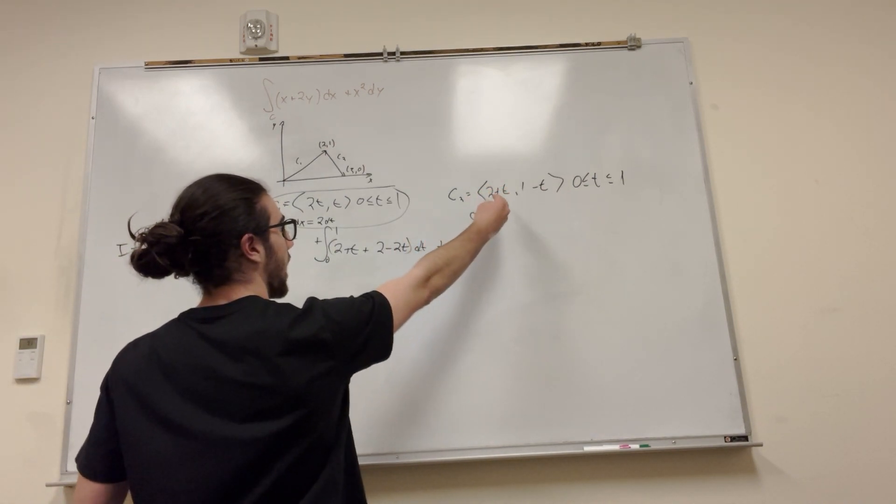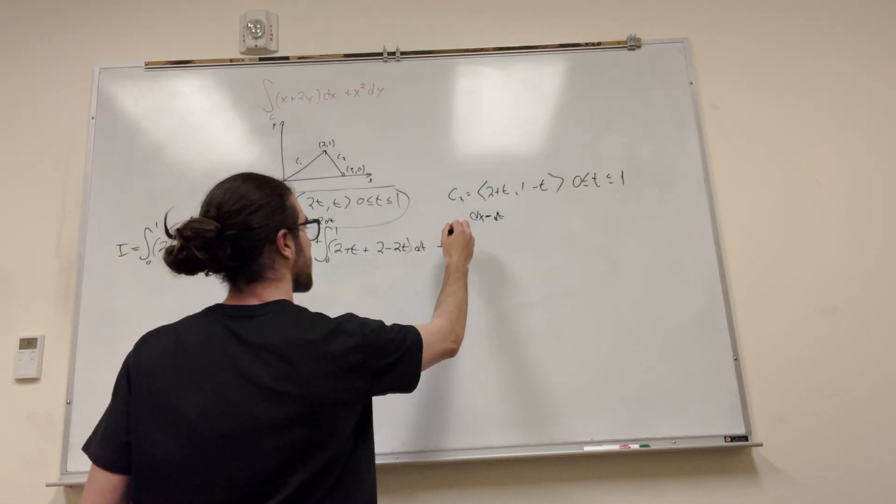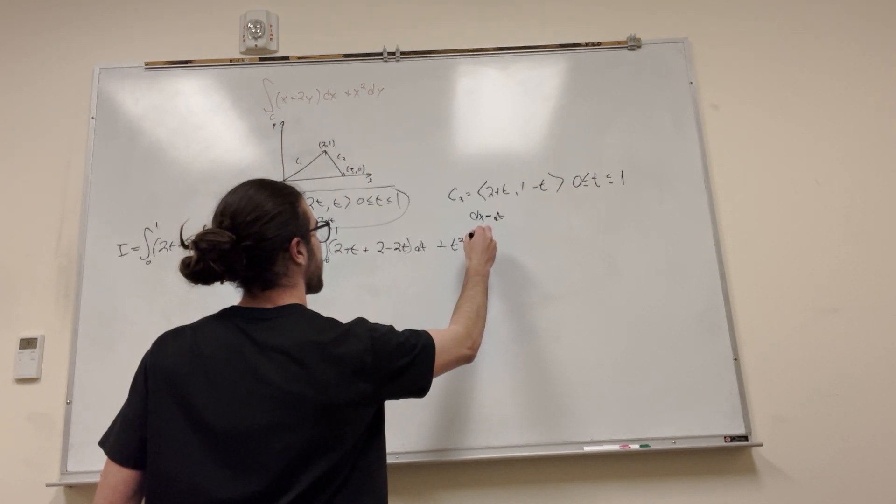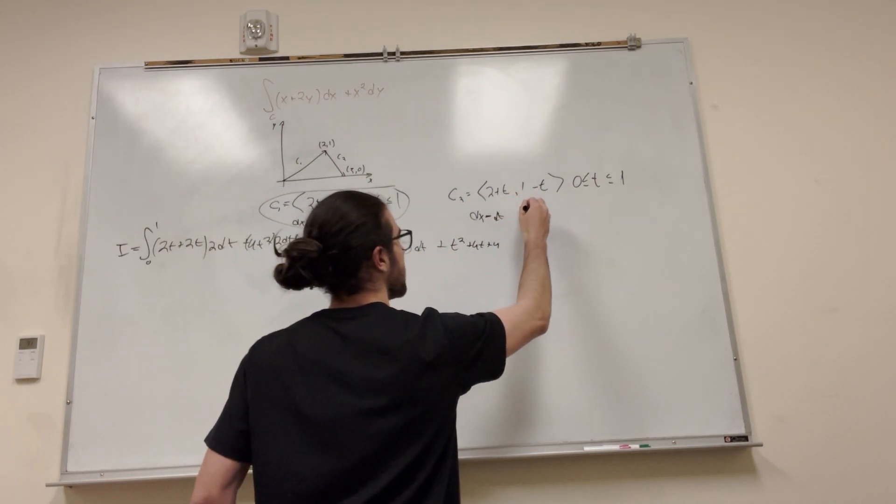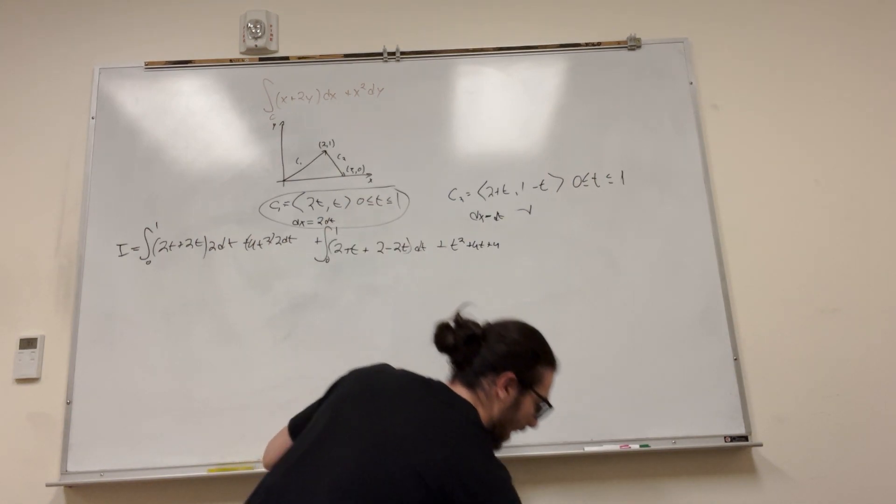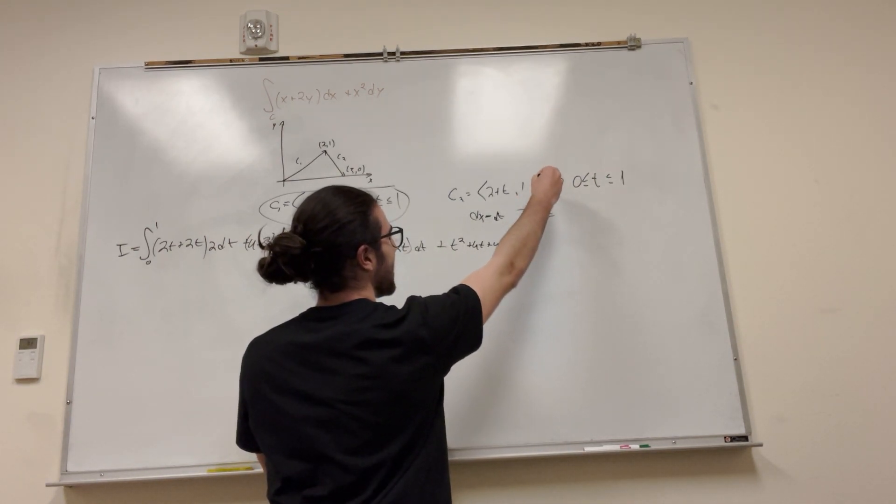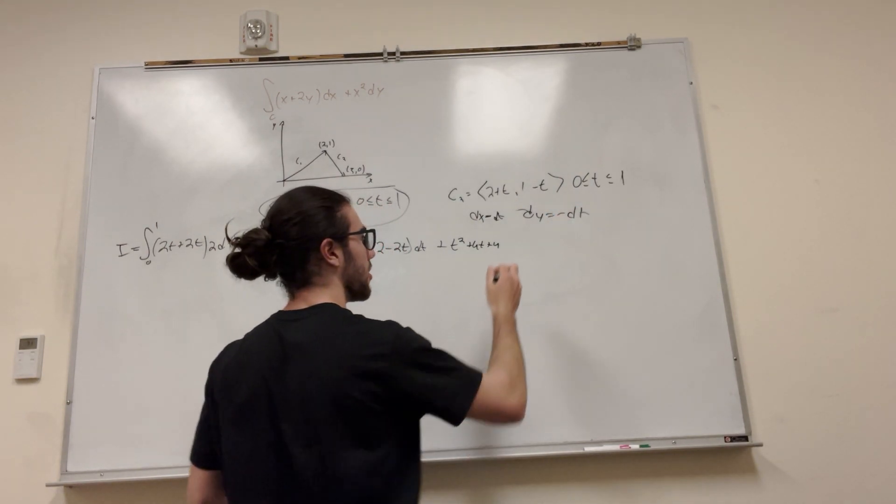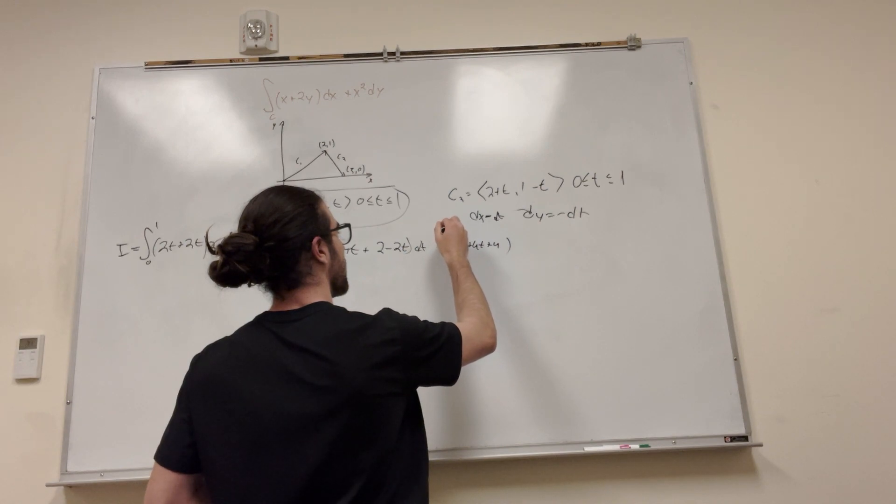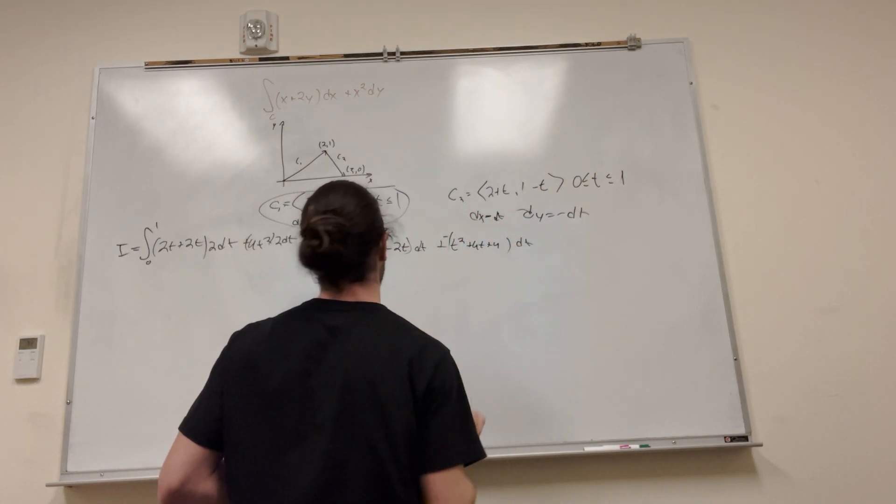And then the plus x squared. x is equal to 2 + t, so you have to foil that. So it's going to be t² + 4t + 4. And then dy, what's dy going to become? dy, it's going to be this. So it's going to be negative dt, right? All right, so we can bring out a negative, negative dt. Hopefully I don't forget that.